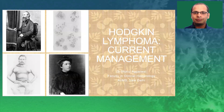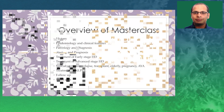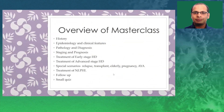We'll be discussing Hodgkin lymphoma, current management. We can identify a few important personalities in the photographs, a very characteristic picture of Hodgkin lymphoma as given in the literature, and the famous Reed-Sternberg cells. This is a brief overview of the class today. We'll discuss under the following heads: history, clinical features, diagnosis, staging, treatment, some special situations, followed at the end by a small quiz.